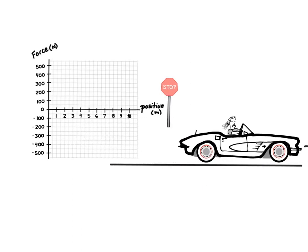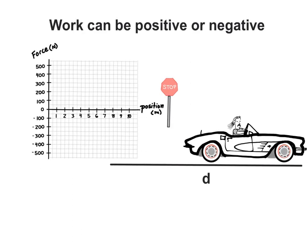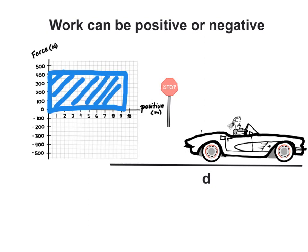Now what would that look like on a graph? A positive force over a positive displacement would look something like this. And since work is the product of force and displacement, then it could also be represented as the area of the shaded region.